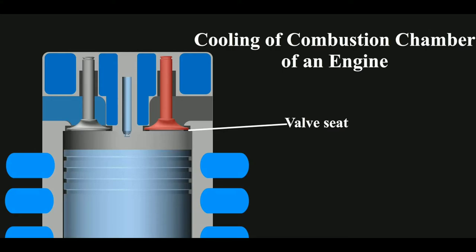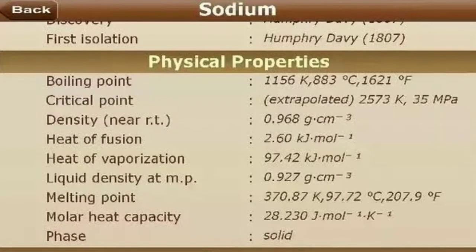Sodium, if you don't know, has a very low melting point. The solid metal of sodium has a melting point of 97 degrees Celsius and a very high boiling point of 883 degrees Celsius.